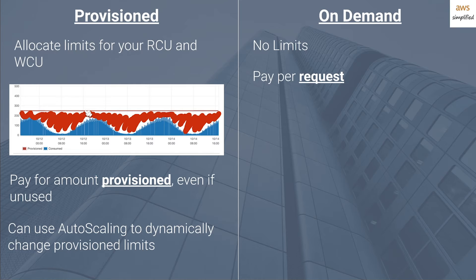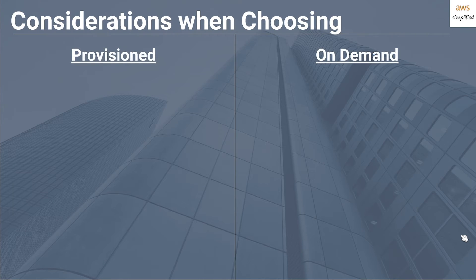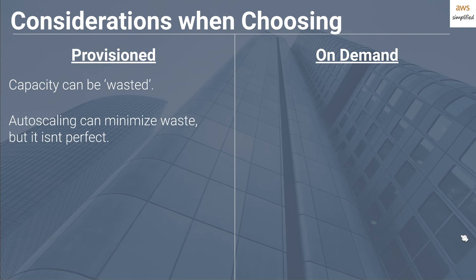Now let's talk about factors you should keep in mind when choosing one over the other. In the provisioned world, capacity can be wasted during periods where you have more provisioned capacity than used capacity. You can use auto scaling to minimize waste, but it isn't perfect — it's often quite reactive and can take several minutes to upscale your table to the required throughput. This means your requests can start being throttled until auto scaling kicks in, which can have some adverse impacts on your application if not handled appropriately.